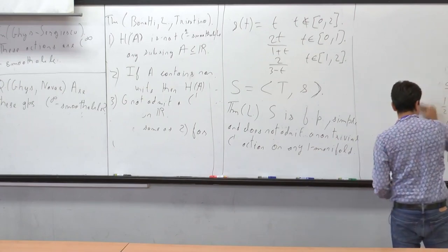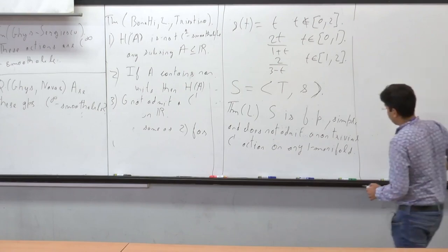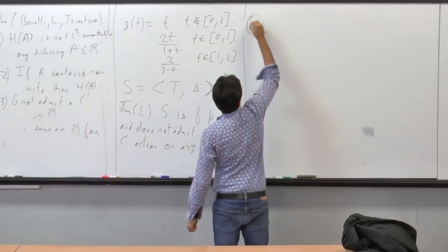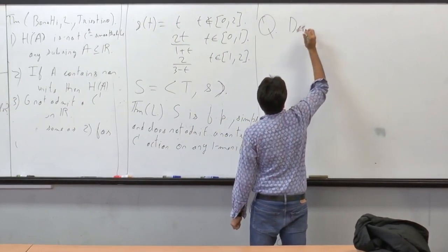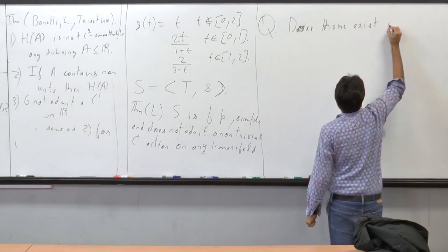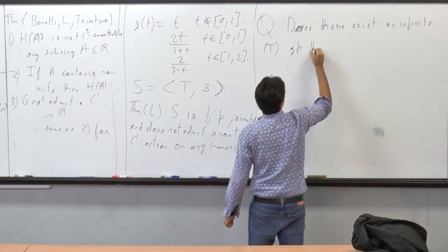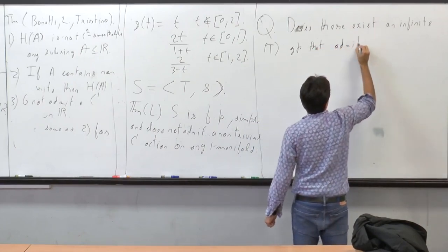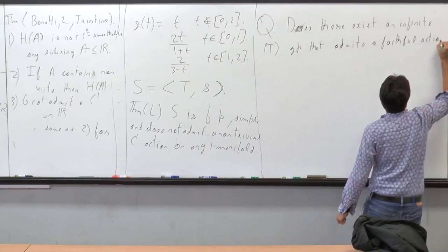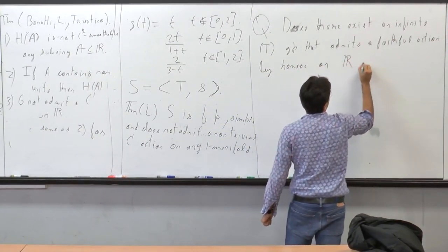There's another question about group actions on one-manifolds: whether there is a property T group that acts by homeomorphisms or by C¹ diffeomorphisms on the circle or the real line. Does there exist an infinite property T group that admits a faithful action by homeomorphisms on ℝ or the circle?